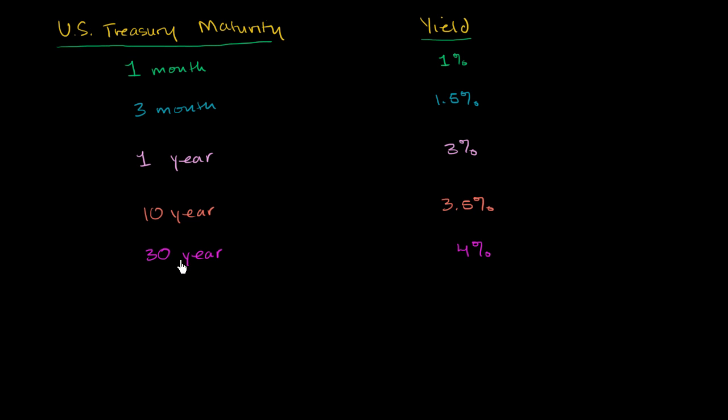And if we essentially plot this on a graph, we get ourselves a yield curve. When people talk about the yield curve, they're talking about the plot for the U.S. Treasury in dollars—U.S. Treasury bills and bonds. You can have a yield curve really for any debt instrument, any corporate bonds, or even government securities or corporate securities of other countries. But in general, when they talk about the yield curve, they're talking about U.S. Treasuries.